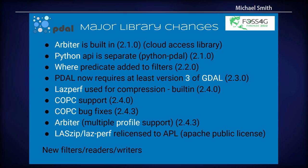A late-breaking change added into Arbiter now is multi-profile support. So you can use two different sets of credentials, or multiple sets of credentials, to hit different cloud data sources for both reading or reading and writing. That's a very useful capability. And there have been a lot of new filters, a few new readers and writers. Check out the website at poodle.io and you'll see a large number of filters available.